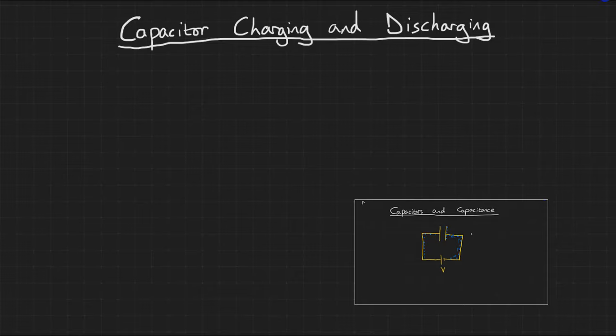Now, as the electrons build up on the negative terminal, it gets harder for other electrons to join them due to their electrostatic repulsion. The rate at which this charge is transferred decreases over time until eventually the potential difference across the capacitor matches the potential difference across the battery and no further current can flow.